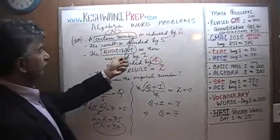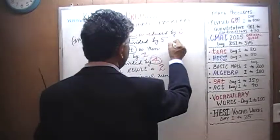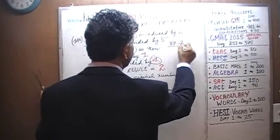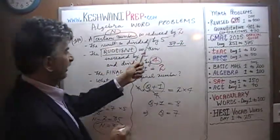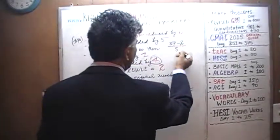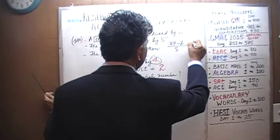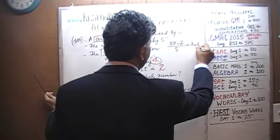37 is reduced by 2. So if we have 37, we reduce it by 2, we get 35. The result is divided by 5. 35 divided by 5 must be 7, and that's our quotient. This is our Q.